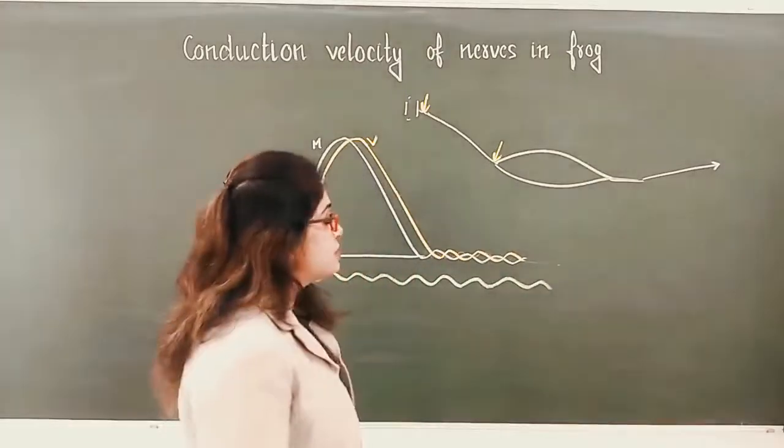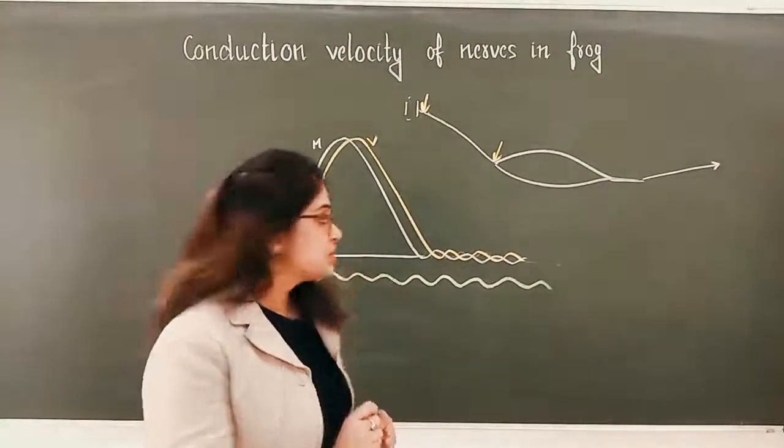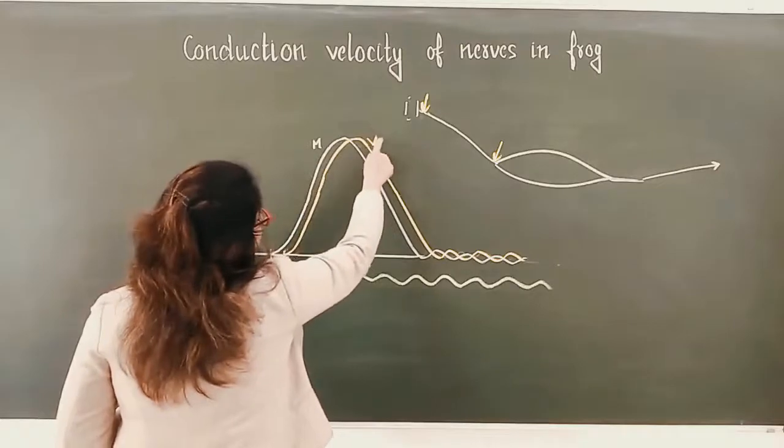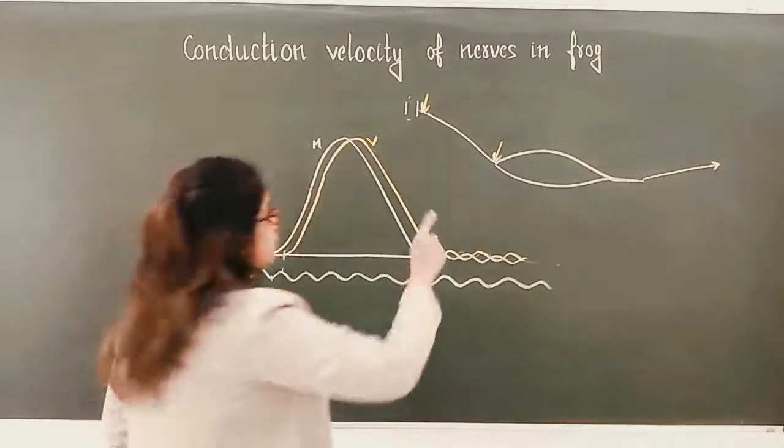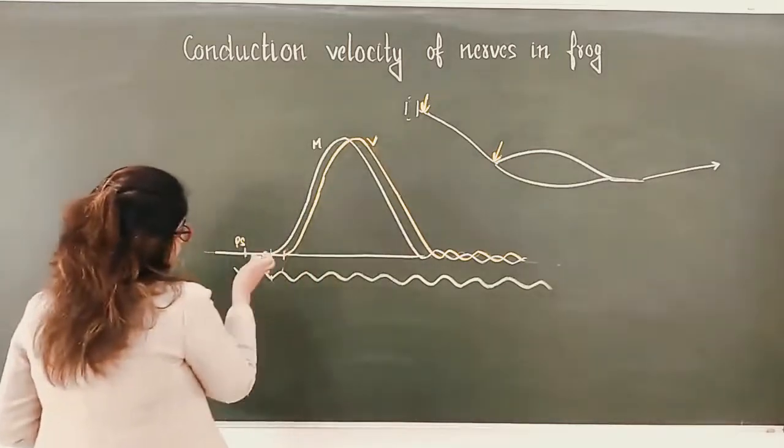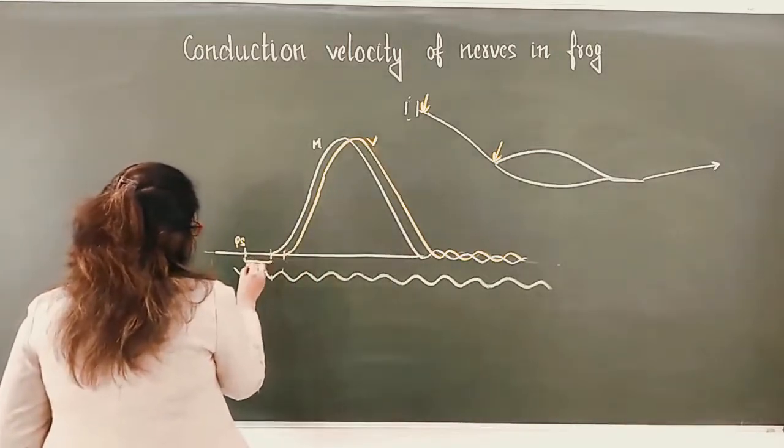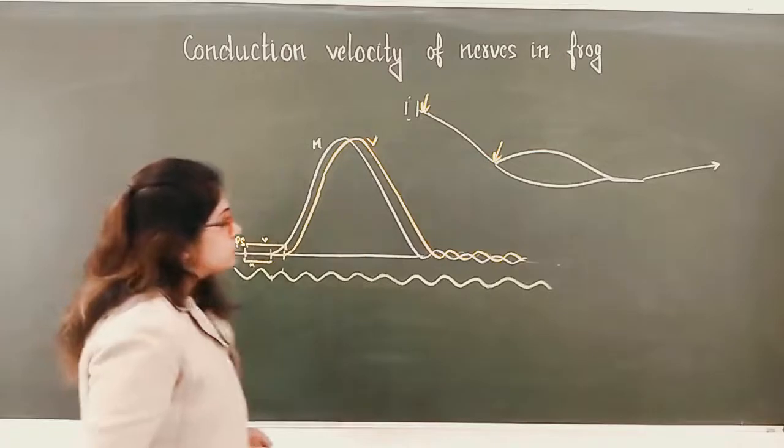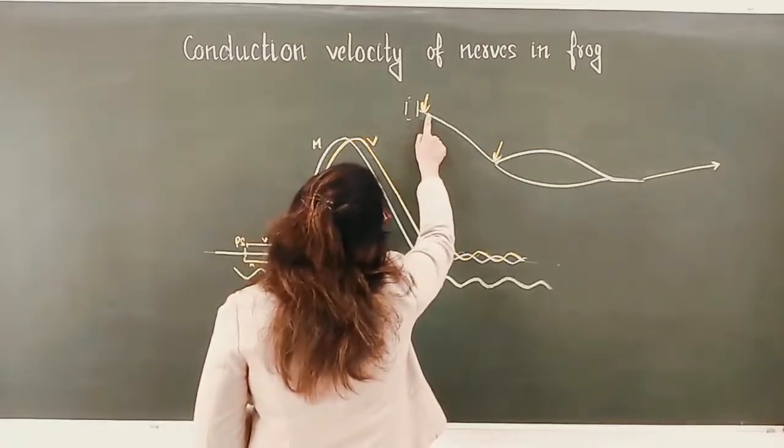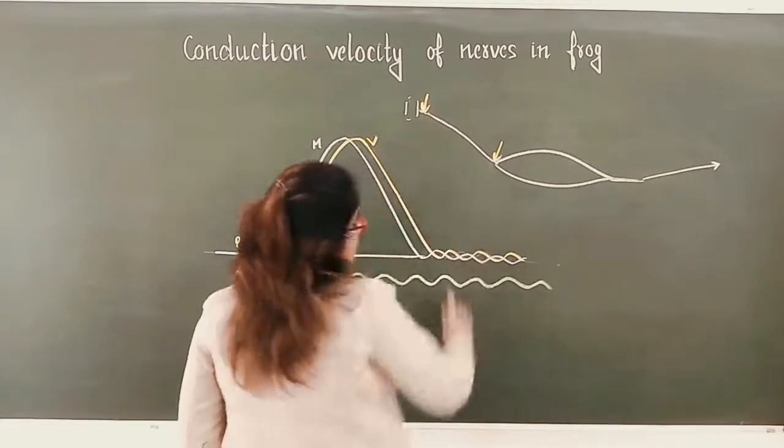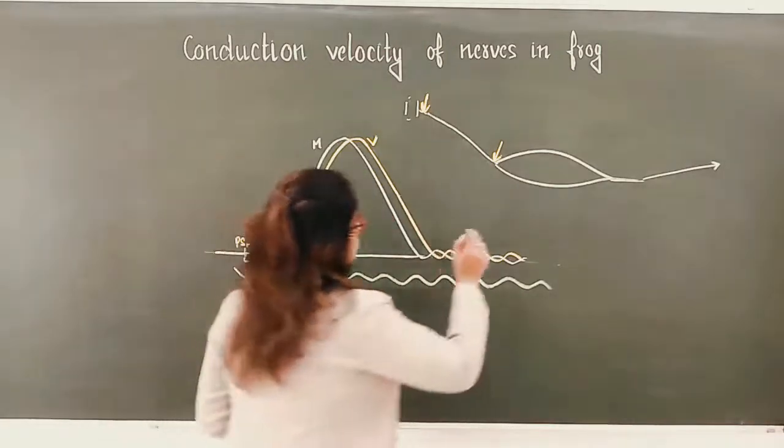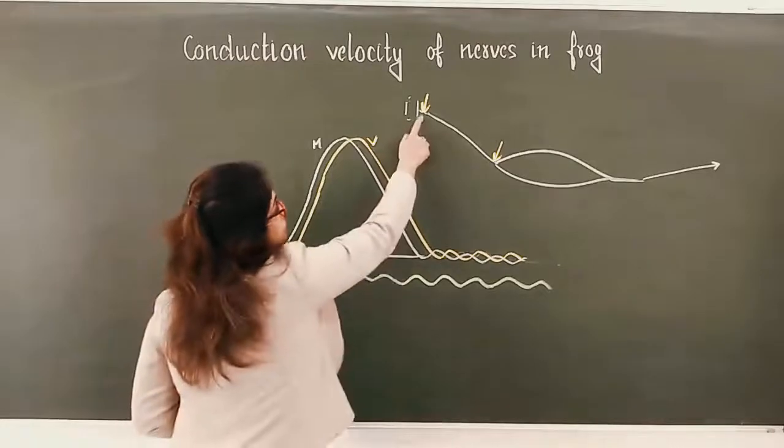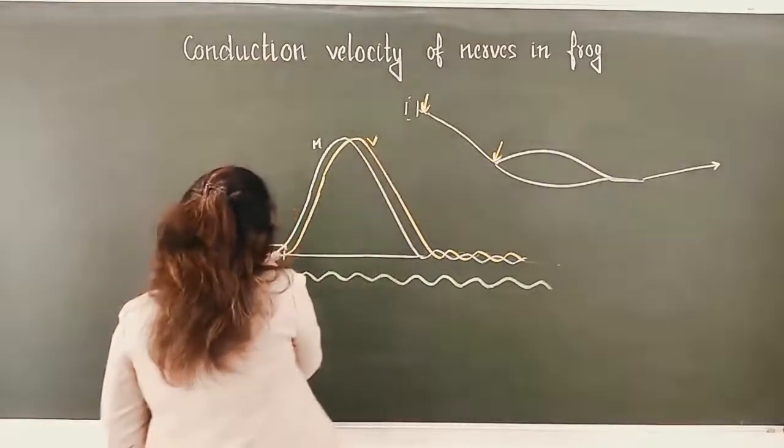Now we will measure the time between the two graphs. This one is the graph obtained when the stimulus is given at the muscle end, and this one is obtained when the stimulus is given at the vertebral end. Why is there a difference in the latent period? When the stimulus is given at the vertebral end, the stimulus has to travel a longer distance. That is why it takes more time to produce the response, so the latent period is more for the vertebral end graph.